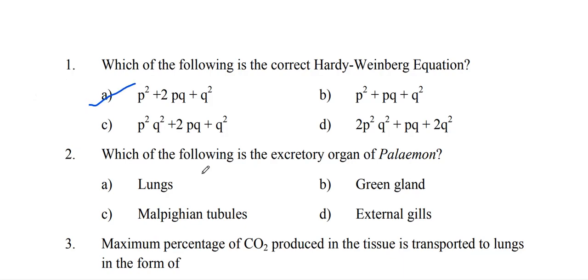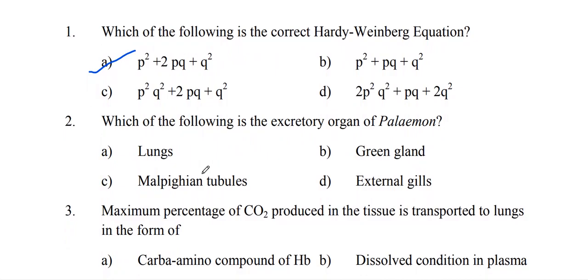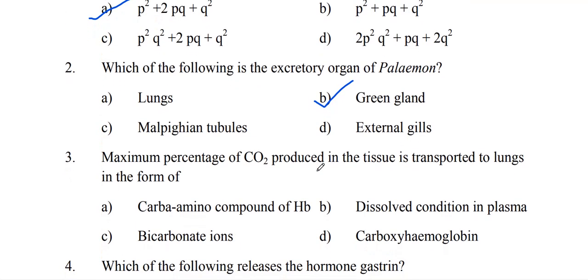Which of the following is the excretory organ of prawn? The excretory organ of prawn is the green gland. The maximum percentage of carbon dioxide produced in the tissue is transported to the lungs in the form of bicarbonate ions.